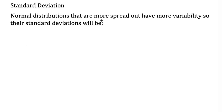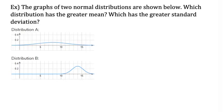Normal distributions that are more spread out have more variability, so their standard deviations will be larger. Remember, standard deviation measures spread — it measures how spread out the data is. Here we have two normal distributions graphed, and we're wondering which distribution has the greater mean.